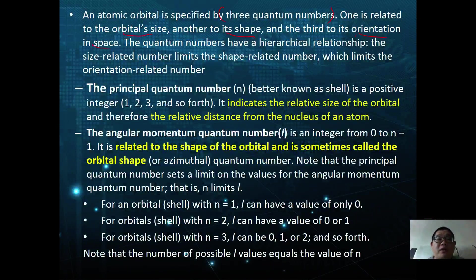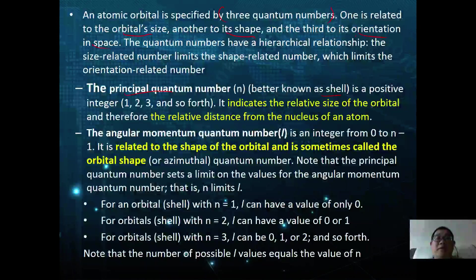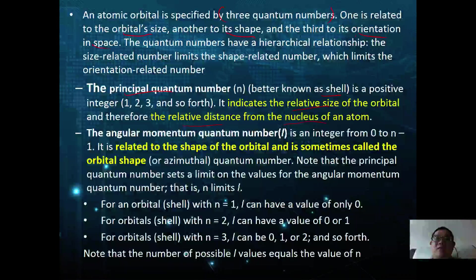The first quantum number is called the principal quantum number, better known as the shell. It is a positive integer — 1, 2, 3, and so forth — and it indicates the relative size of the orbital and therefore the relative distance from the nucleus of an atom.